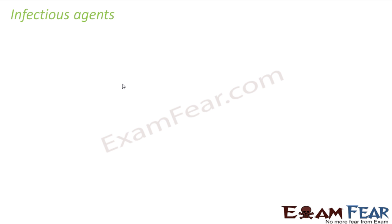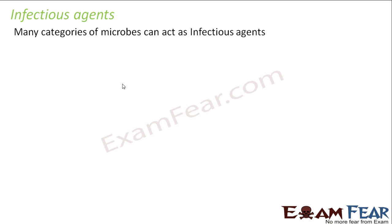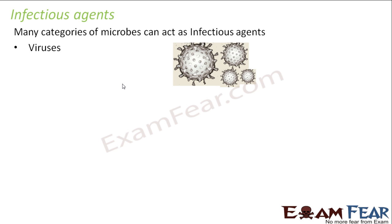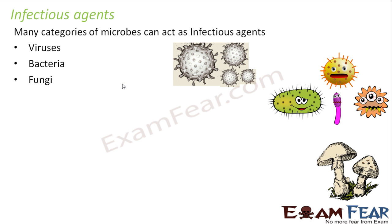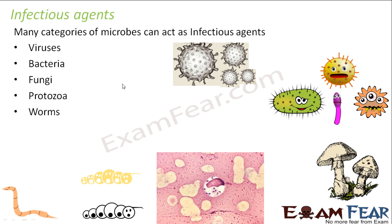Now let us talk about the infectious agents in detail. In this lesson, we will give more attention to infectious diseases - how the infection takes place, what the infectious agents are, what diseases they cause, how they enter our body, and how we can get rid of them. Many categories of microbes act as infectious agents: viruses, bacteria, fungi, protozoa, and worms.